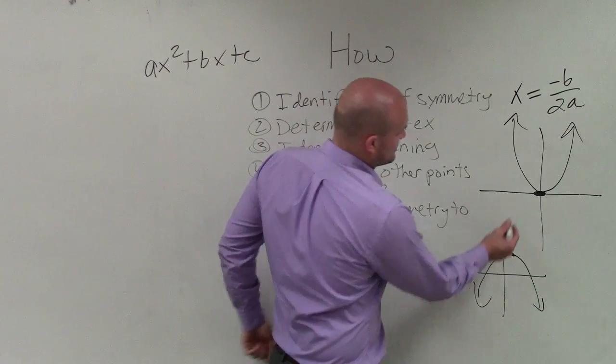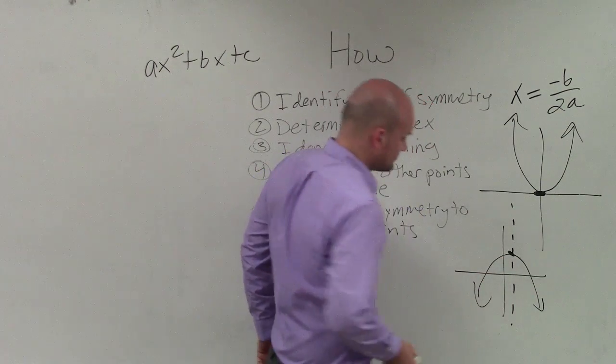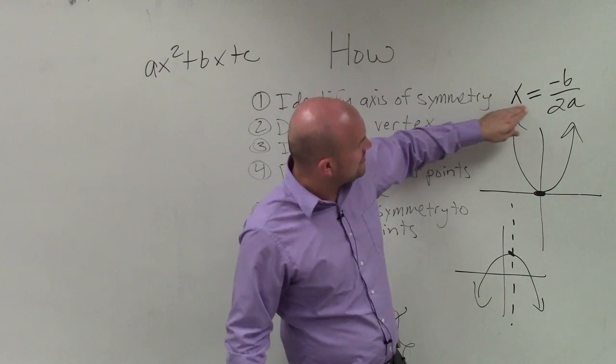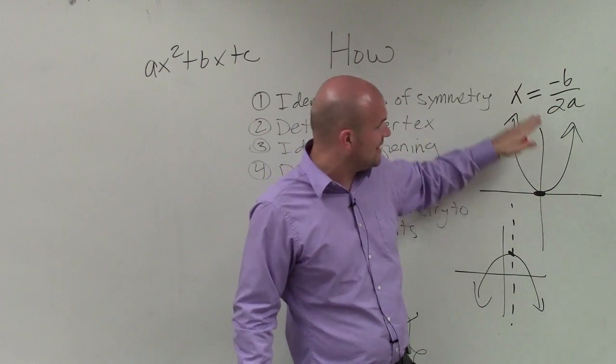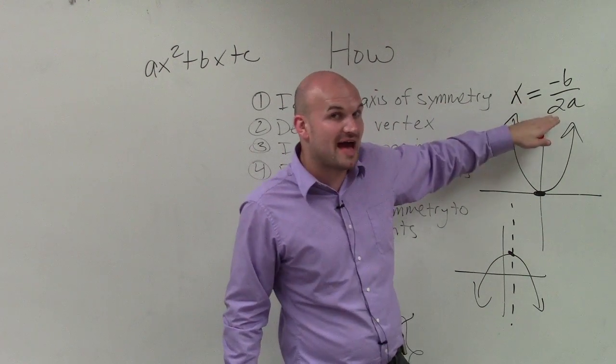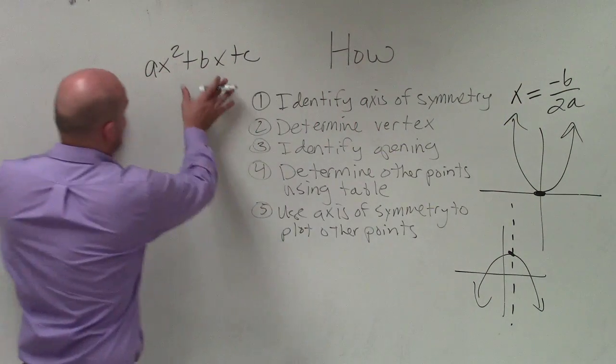notice that the axis of symmetry goes through the vertex. So therefore, the x-value of our axis of symmetry, which makes our vertical line, is going to be the x-value of our vertex. So all we need to do is plug this value into our quadratic equation or function,